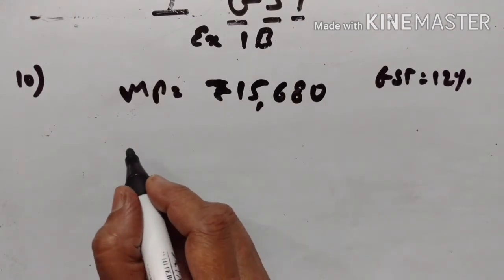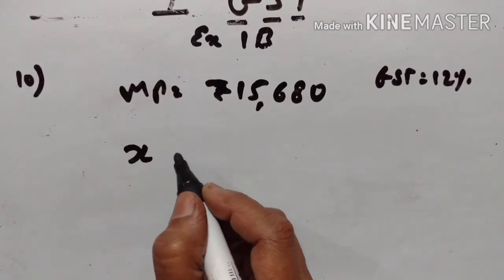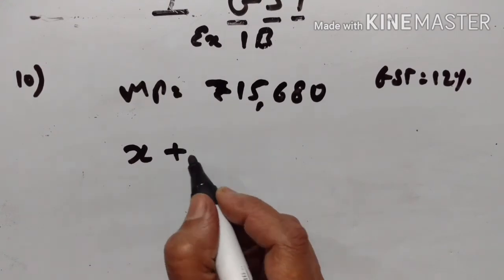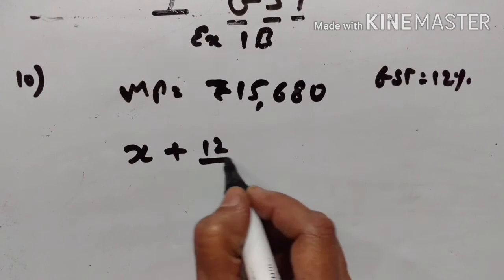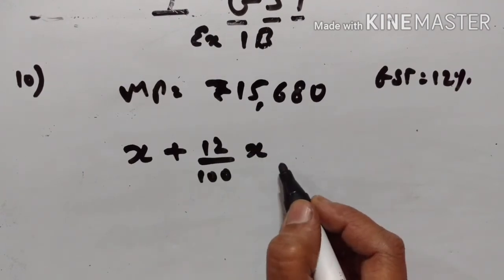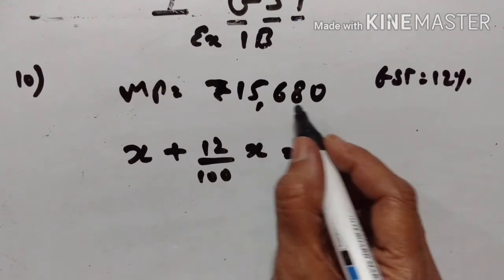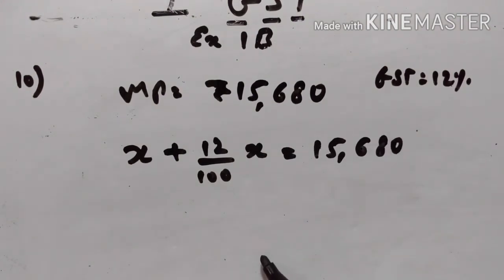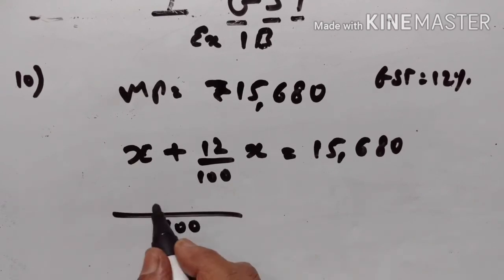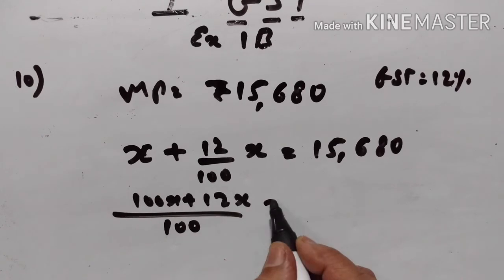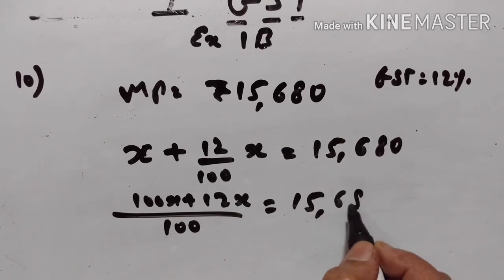Let the reduced price be equal to X. Then X plus GST, where GST is 12% of the reduced price, is equal to the marked price Rs.15,680. So 100X plus 12X is equal to 15,680.